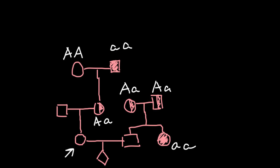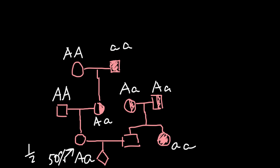We can shade half the circle to show that the woman's mother is a carrier. Her spouse is assumed to be genetically unrelated and homozygous dominant. So what is the probability that this woman inherited the recessive allele? From her father's side she can only get the dominant allele A, and from her mother's side she can get either the dominant allele A or the recessive allele a — equal chances. So the probability for the woman to be a carrier is 50%, or one half, or 0.5.